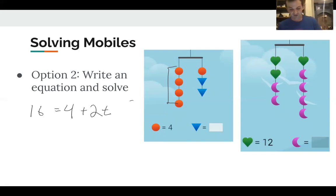And then we can solve it the exact same way we always do. Subtract four, we get 12 equals 2T. And then we divide by two, divide by two, and we get that the weight of the triangle is six, which is of course what we already got. That's how we would write the equation for the first one.